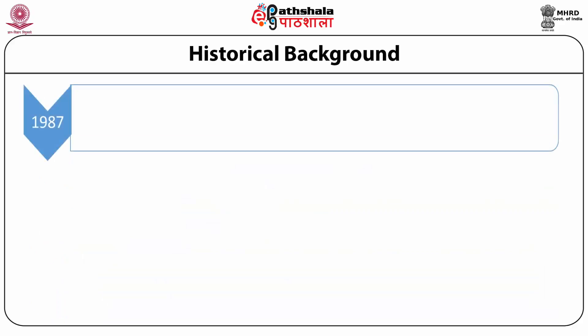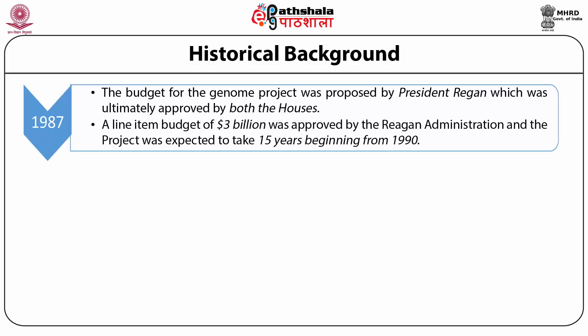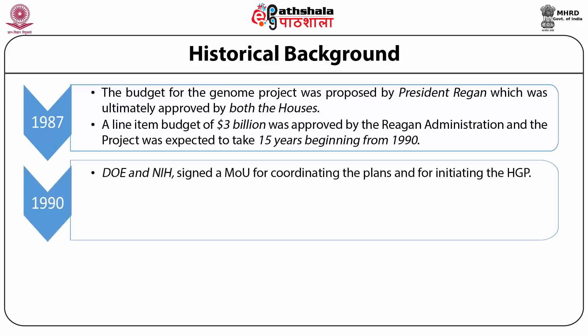It was in 1987 that the budget for the Genome Project was proposed by President Reagan, which was ultimately approved by both Houses of the US Parliament. A lifetime budget of $3 billion was approved by the Reagan administration and the project was expected to take 15 years beginning from 1990. Both the DOE and the NIH signed an MOU for coordinating the plans and initiating the HGP.